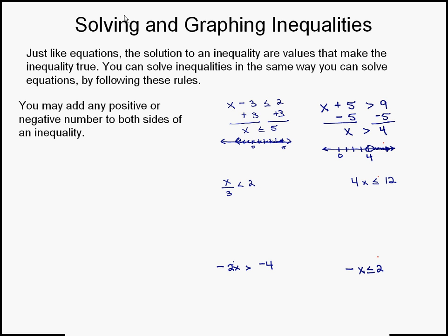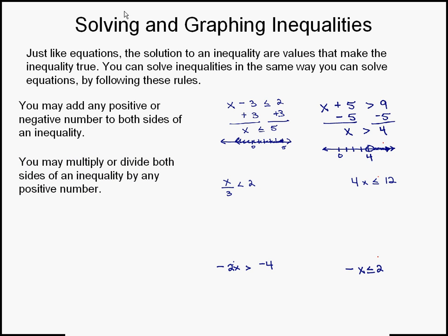The next rule is you may multiply or divide both sides of an inequality by any positive number. Looking at the inequality x divided by 3 is less than 2: 3 is dividing the variable, so we're going to perform the inverse operation, which is multiplying both sides by 3. Because 3 times x divided by 3 is just x, the left side becomes x, and that's going to be less than 6. The solution is all numbers less than 6, not including 6.